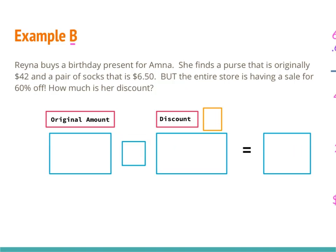In example B: Reina buys a birthday present — a purse originally $42 and a pair of socks for $6.50, but the entire store is having a 60% off sale. How much is her discount? I've laid out three boxes: one for the original amount, one for the discount, and one for the total. First I need to figure out the original amount since she's buying more than one thing.